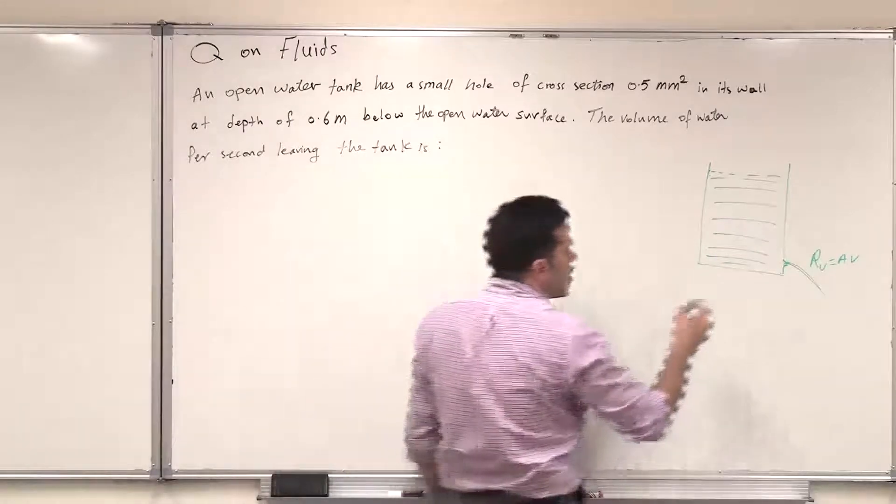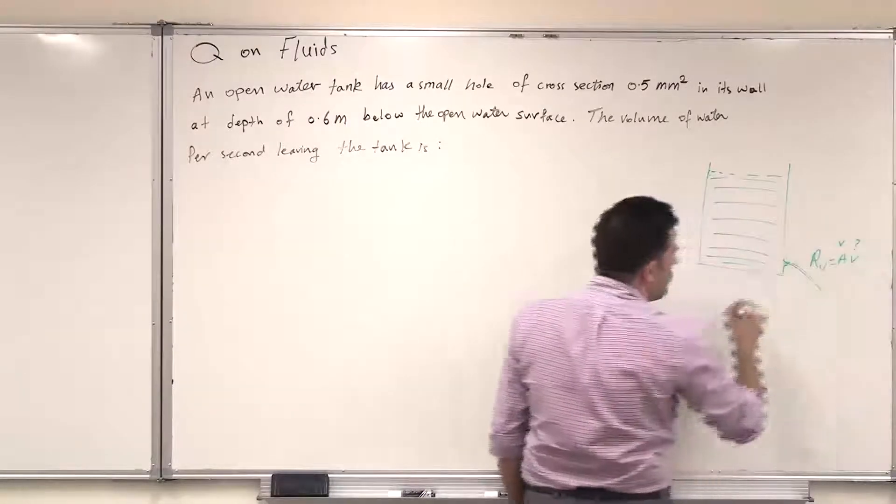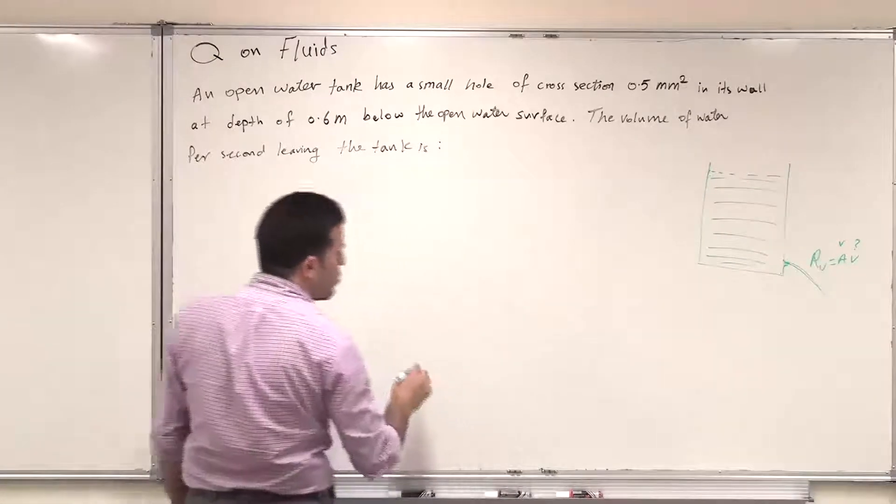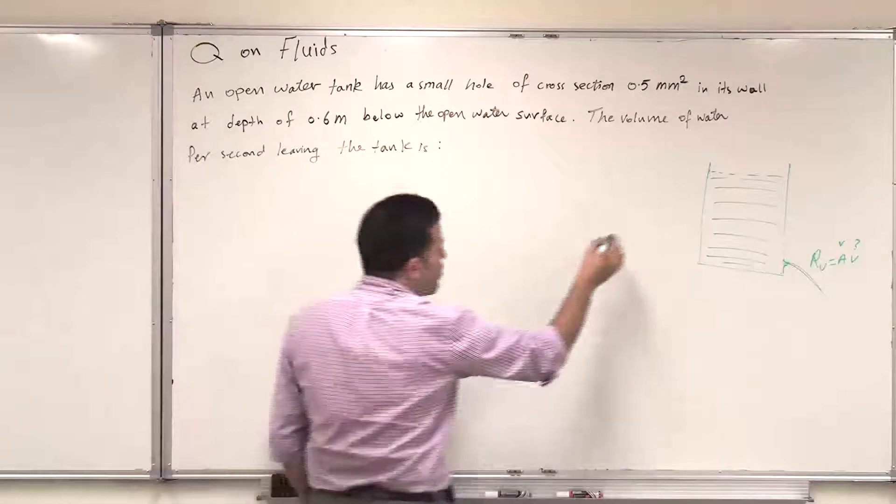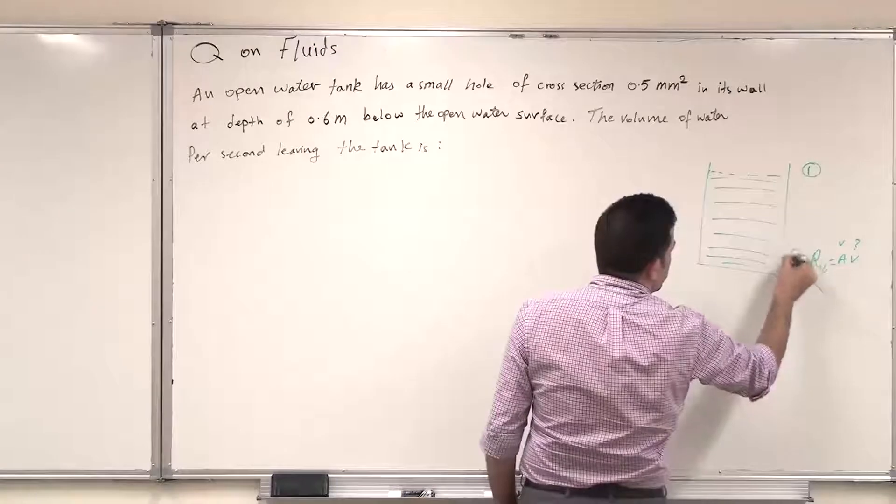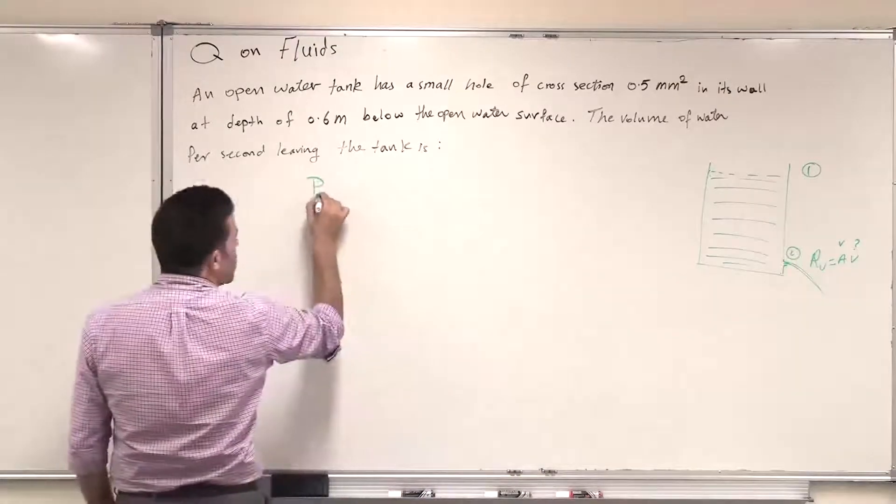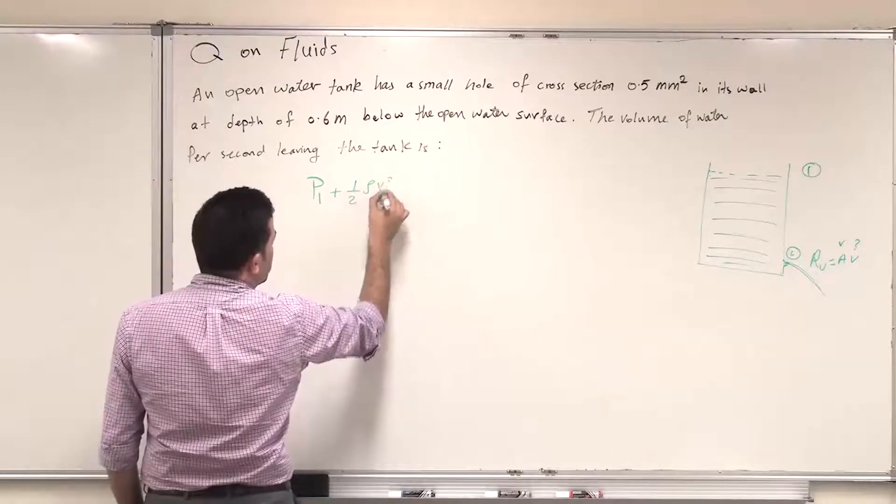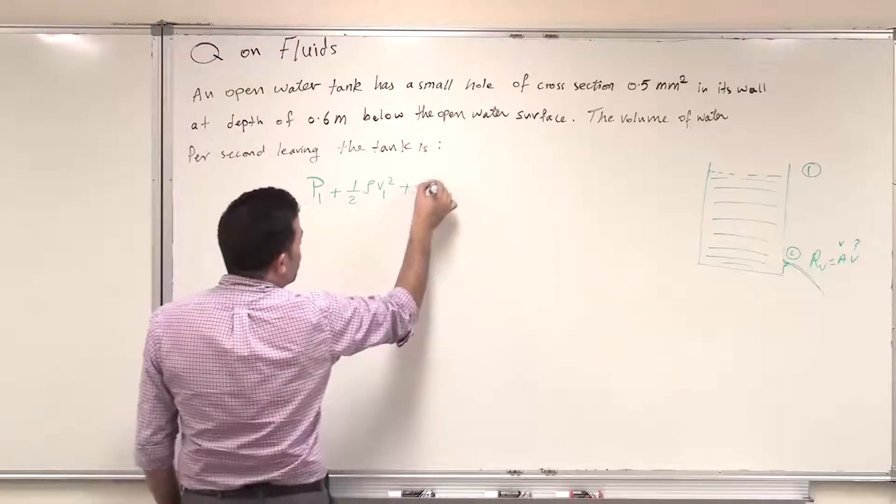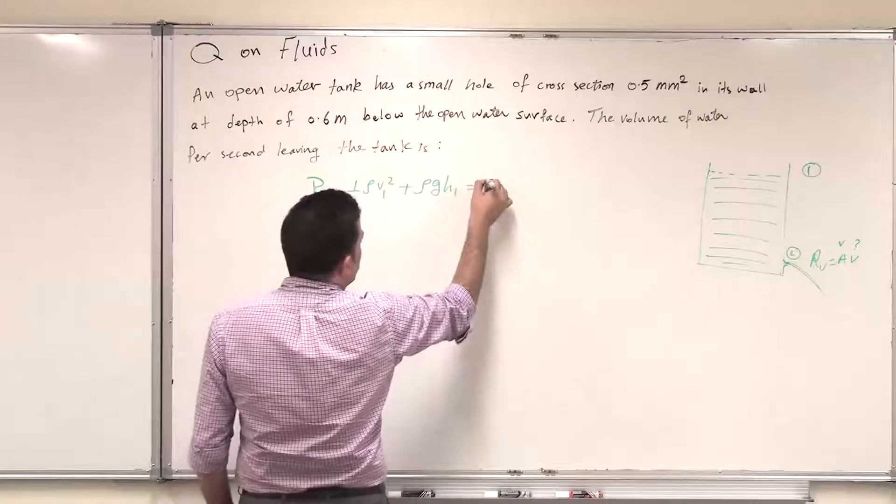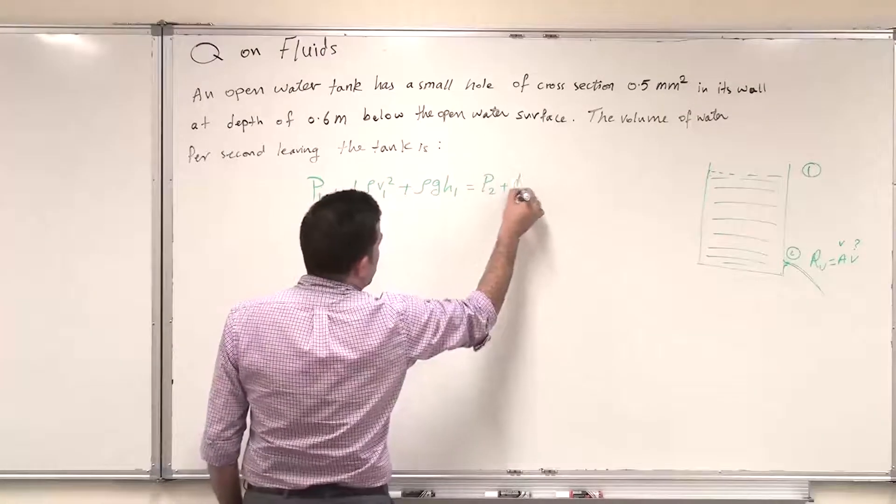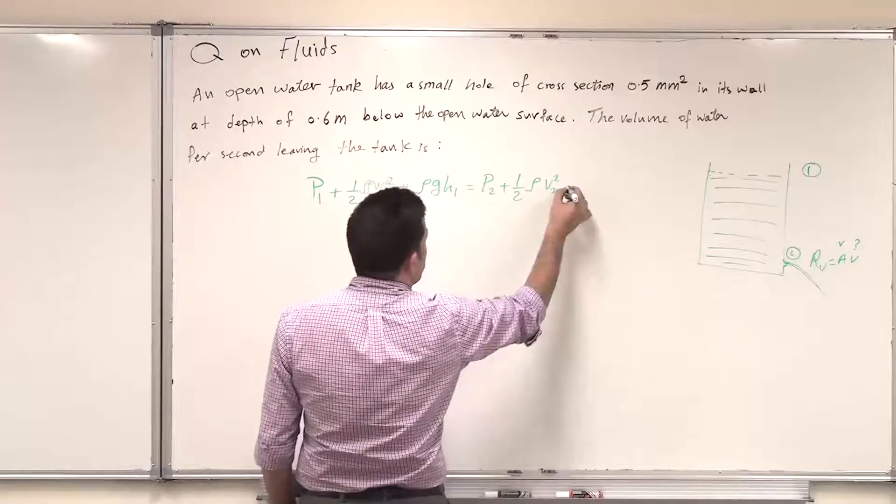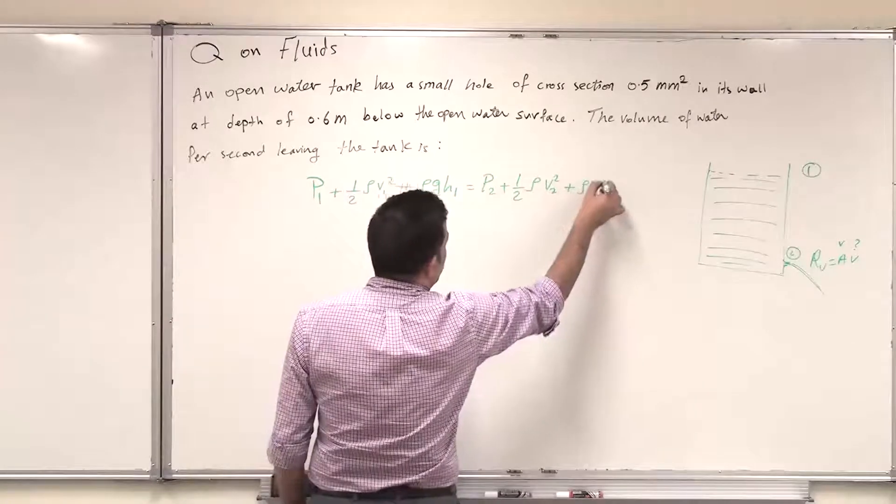So in order to find it we have the cross section but we don't have the speed or velocity of water leaving the tank. So in order to get the speed or velocity of water leaving the tank we can use Bernoulli equation by comparing this point with this point. So we can say that P1 the pressure at 1 plus half rho V squared the velocity at 1 plus rho GH1 should equal pressure at 2 plus half rho the density V2 squared plus rho GH2.